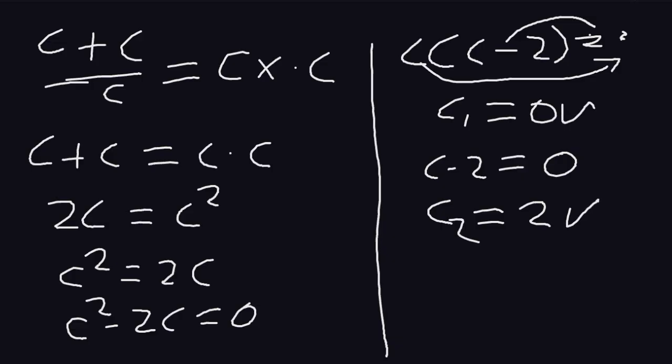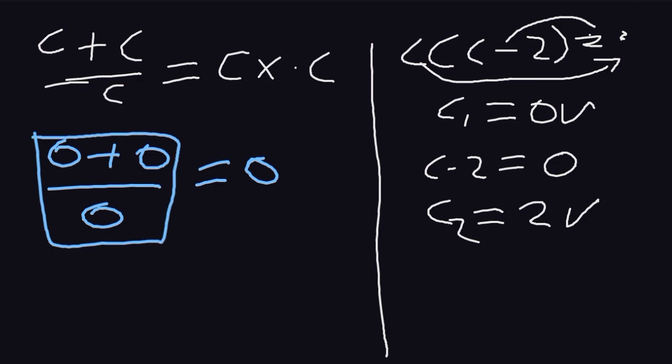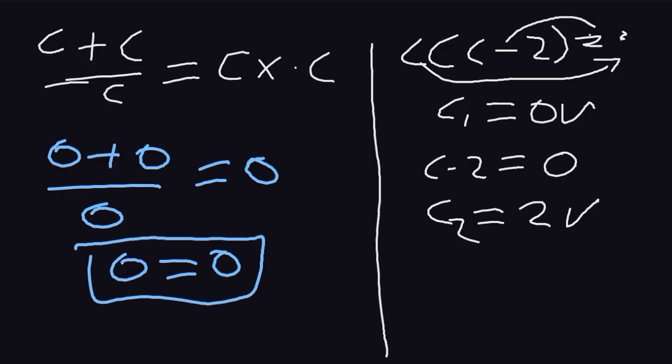What we are remaining with is verification. We begin with 0. We have 0 plus 0 divided by 0, which should give us 0. Everything here is equal to 0. The left-hand side is equal to the right-hand side, which means that 0 satisfies our expression.